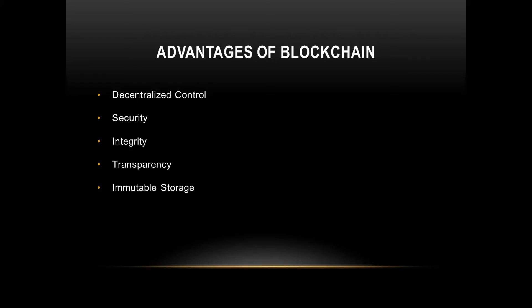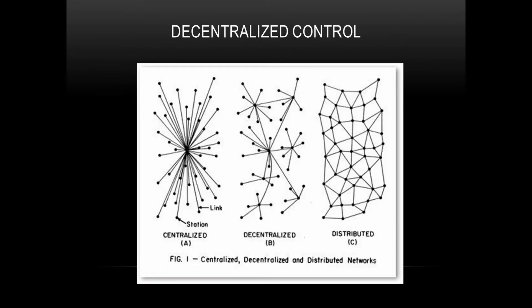The blockchain has many advantages like decentralized control, security, integrity, transparency, and immutable storage, with more advantages coming out day by day. In the first figure, you can see there is a centralized server with many nodes connected to it — this is a centralized network.